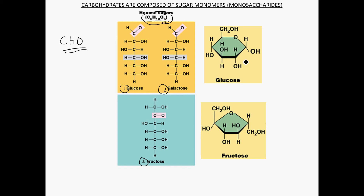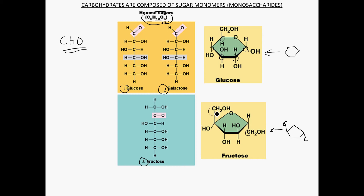You don't normally see them in linear form — you'll normally see them as ring structures. Glucose is C6H12O6, and the carbons are at the vertices of the ring, so glucose is often shorthand as a hexagon. Fructose is also C6H12O6, but it is a pentagon shape because two of the carbons are off the ring. If you're having a hard time with the ring structure, you may want to use the molecular model kits to build them in three dimensions.